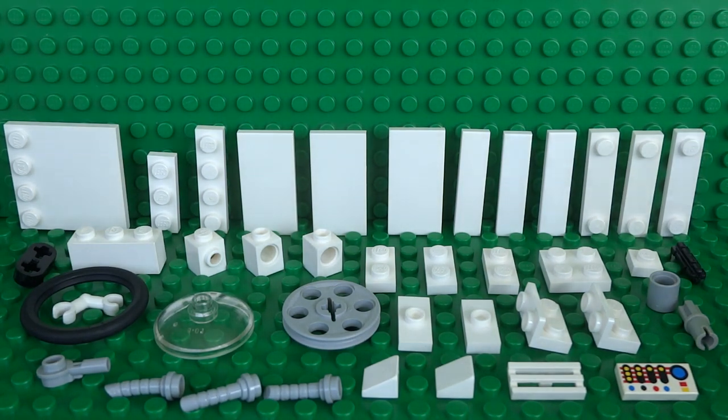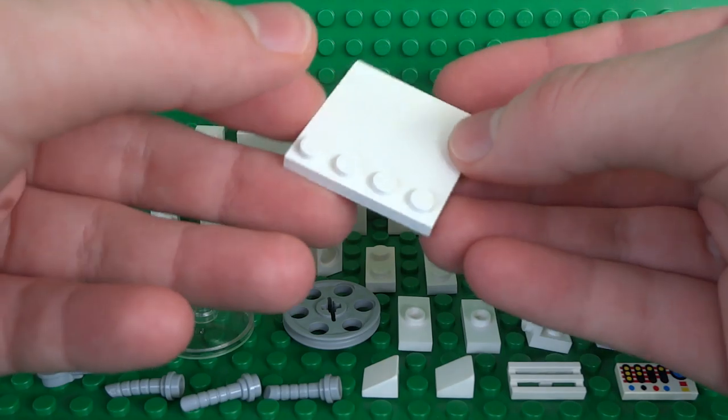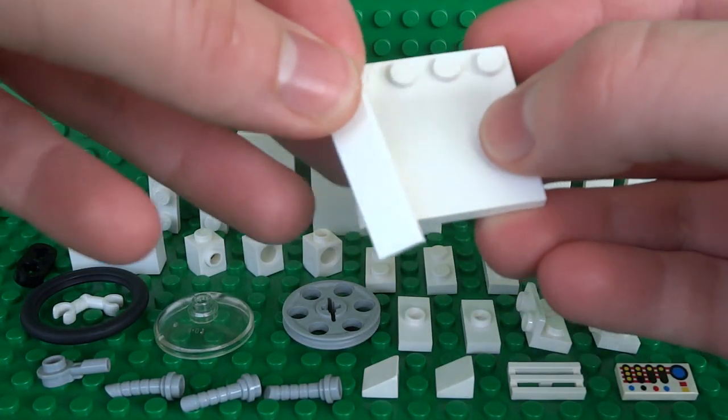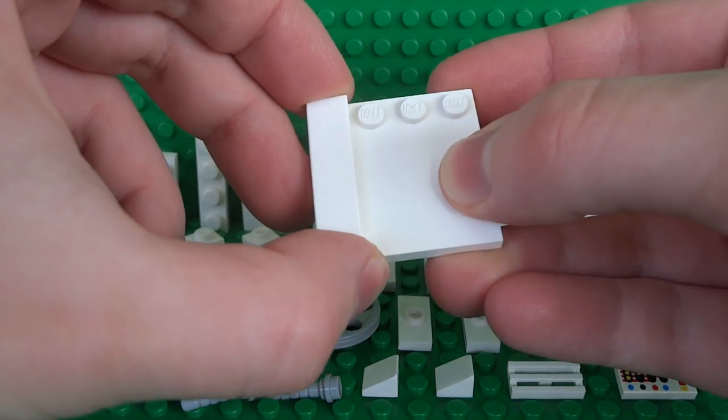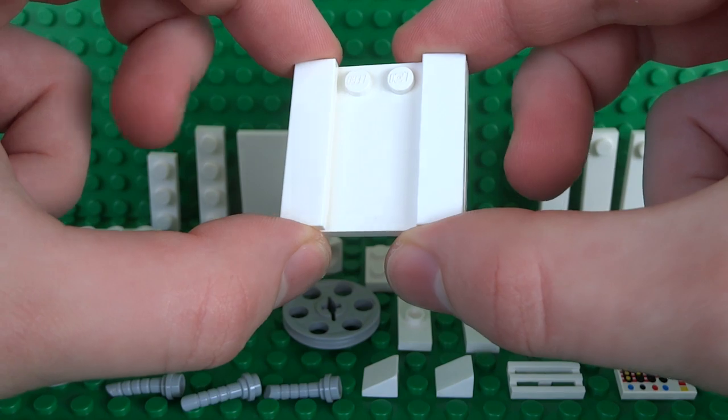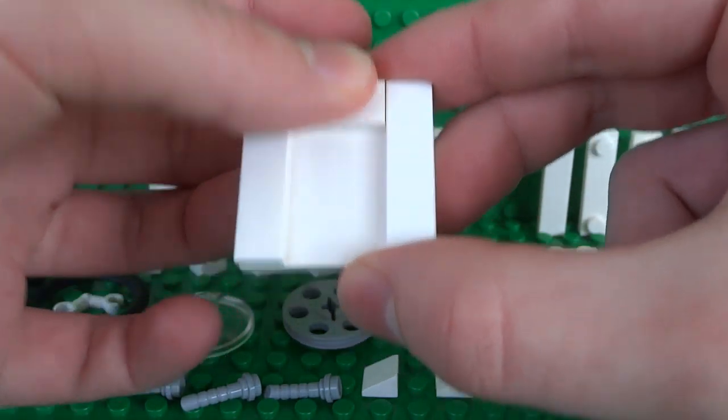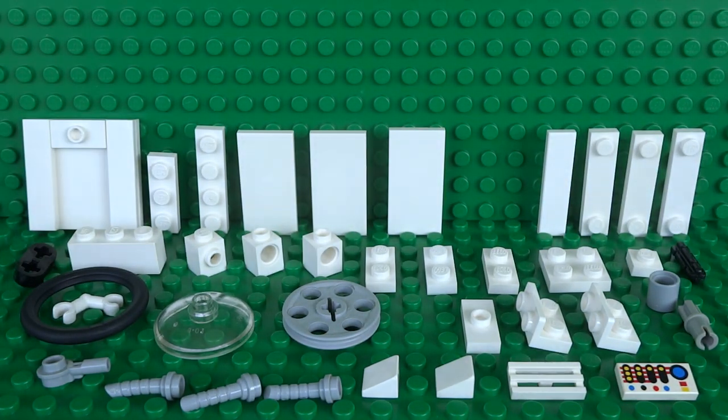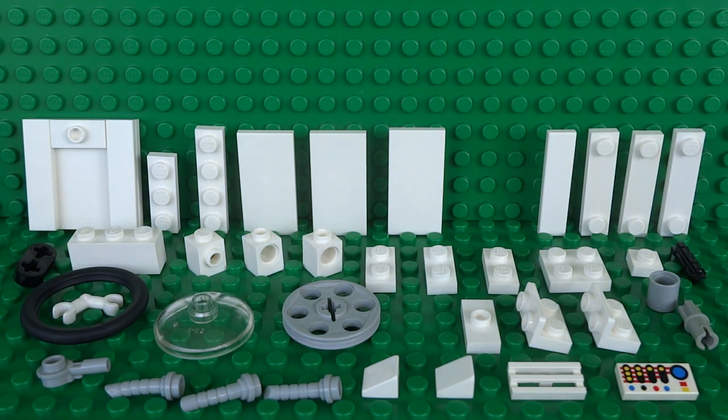So once you've collected all your pieces we're actually going to start off by building several sub assemblies. So first the actual base of the washing machine this uses a 4x4 plate with studs on the end two 1x4 tiles then a 1x2 jumper in the middle and we can put that assembly aside for now because next we're going to build the top of the washing machine.